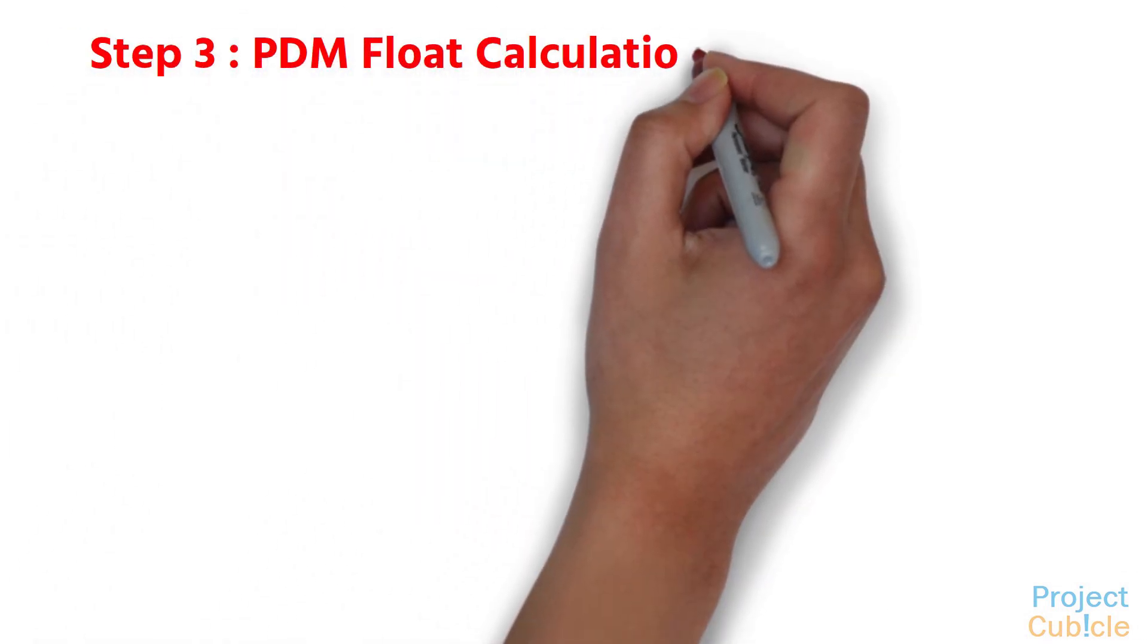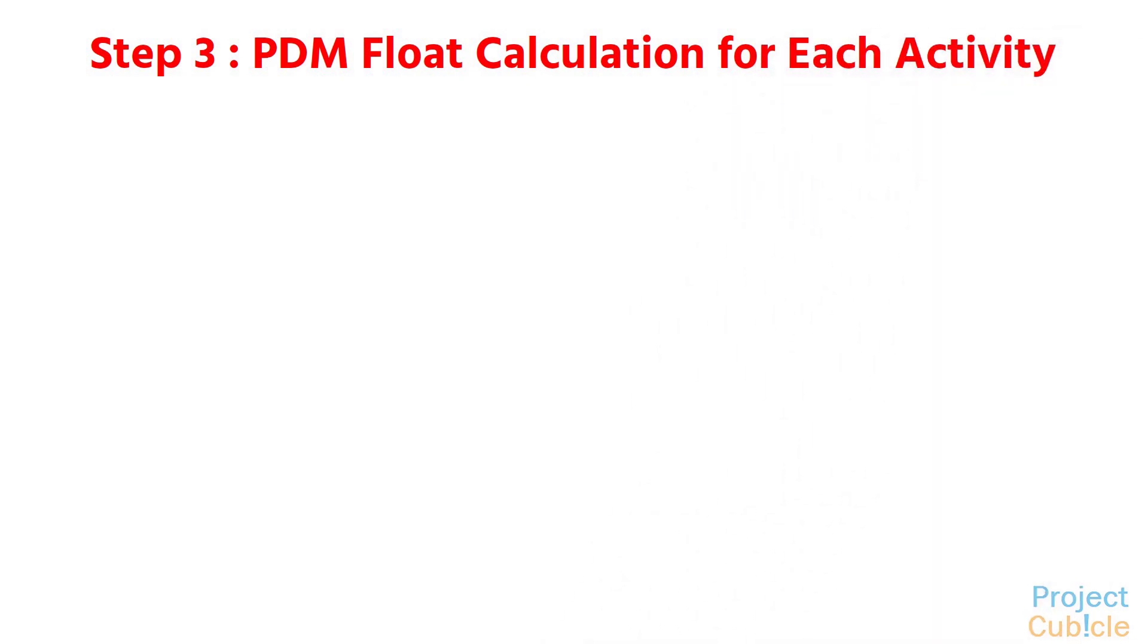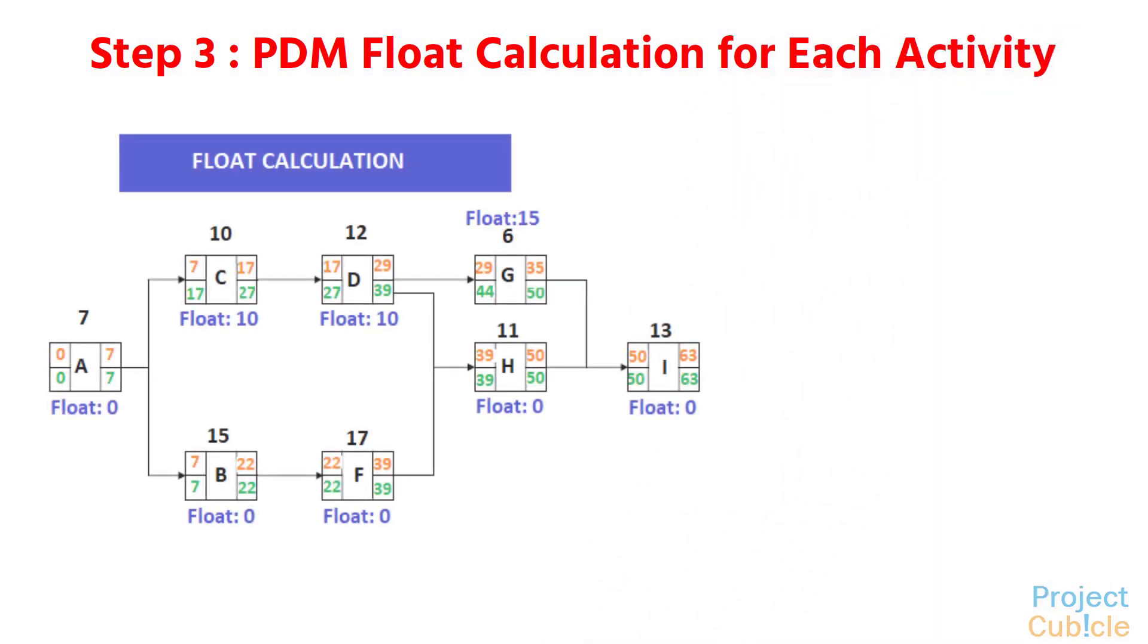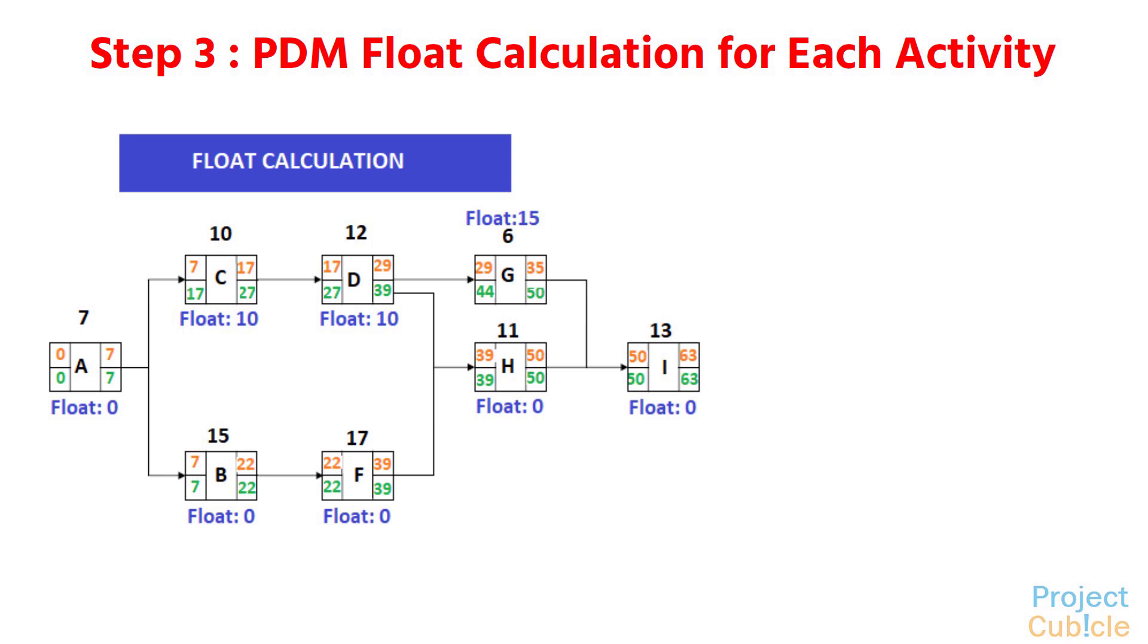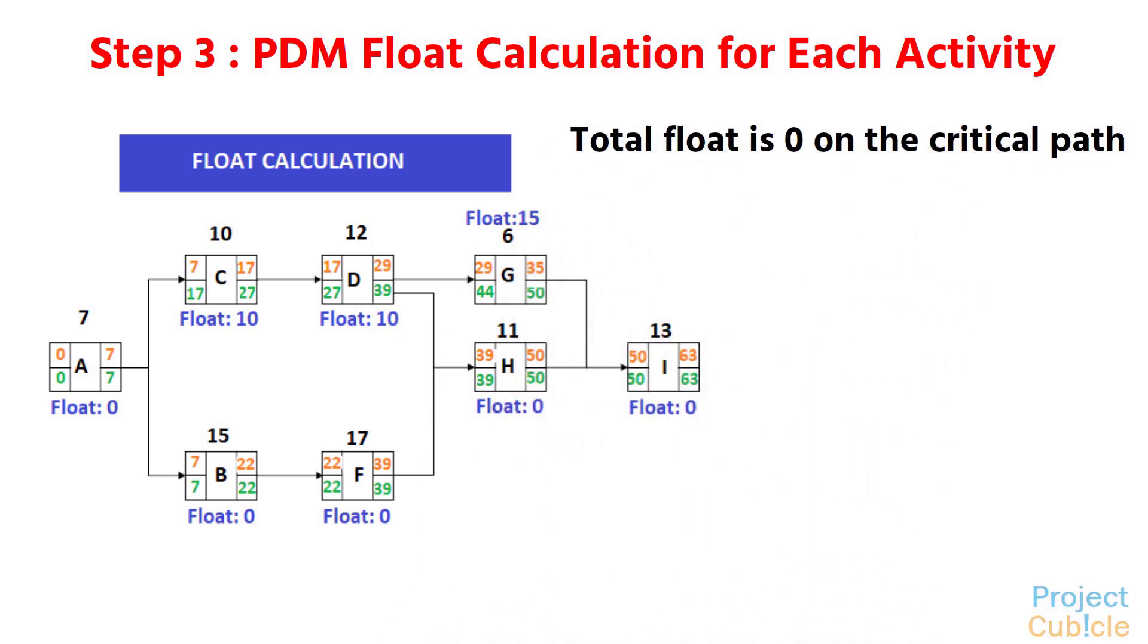Step 3: PDM Float Calculation for Each Activity. Total Float is the amount of time that an activity can be delayed without delaying the project completion date. Total Float is 0 on the critical path.